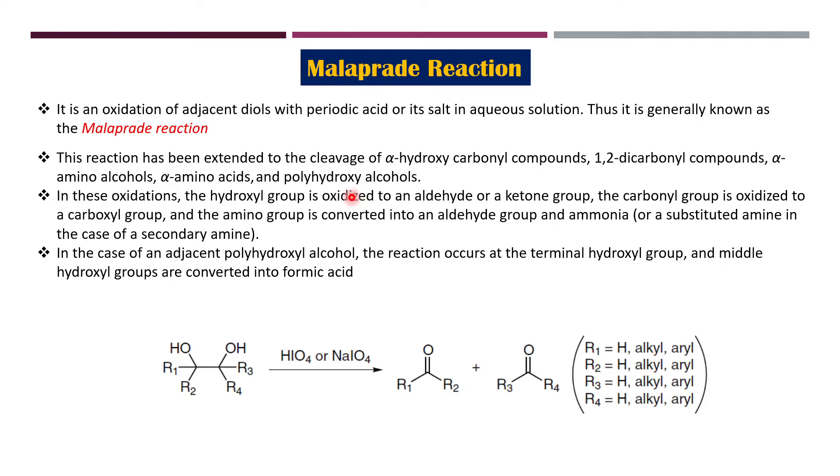Also in this oxidation, the hydroxyl group is oxidized to an aldehyde or ketone, the carbonyl group is oxidized to a carboxyl, very important point, and the amino group is converted to an aldehyde because it will lead to the formation of an imine and then the imine will undergo hydrolysis to give the aldehyde, or a substituted amine in case of a secondary amine. In case of adjacent polyhydroxyl alcohol, the reaction occurs at the terminal hydroxyl group and the middle hydroxyl group is converted to formic acid.